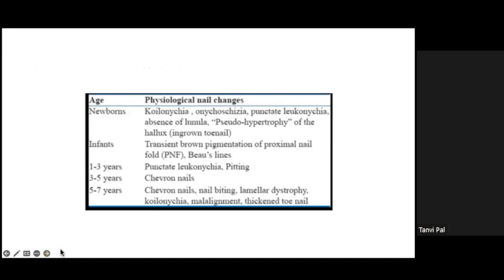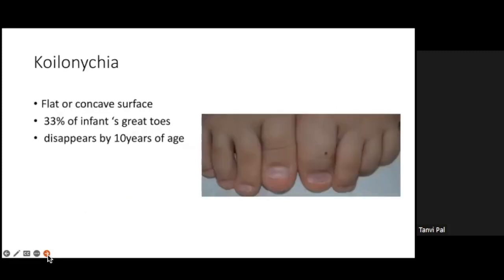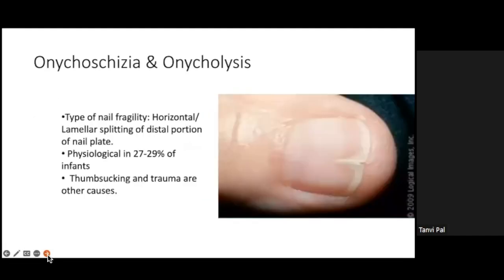Koilonychia is the first physiological alteration — it is a flat or concave-shaped nail. Around 33 percent of infants' great toes are affected by koilonychia, and it usually disappears by the age of 10 years. Reassurance is all that is needed.